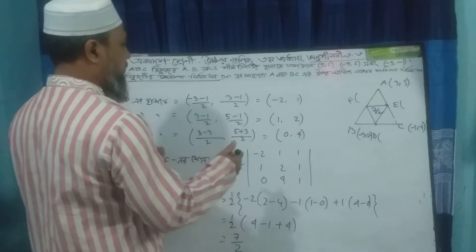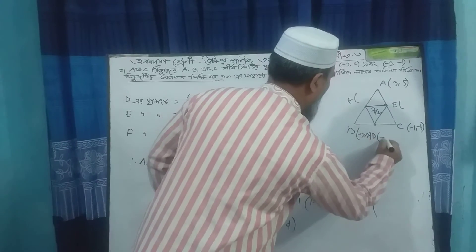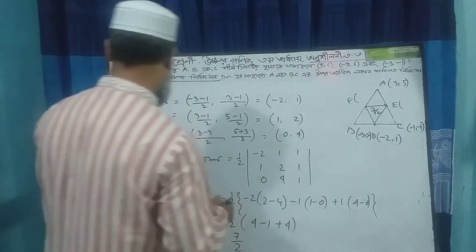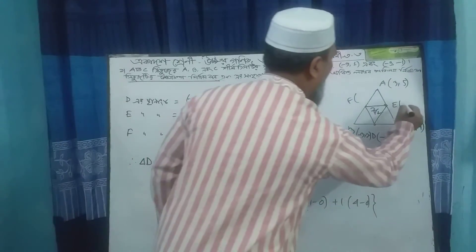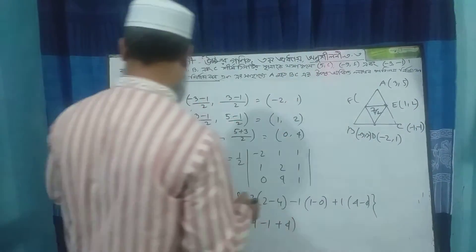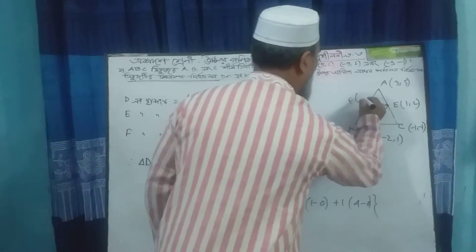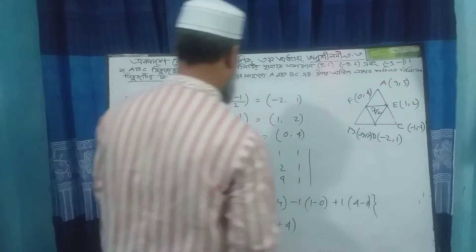d8 is tanagou minus 2, 1. e8 is tanagou 1, 2. If you are tanagou jitu 4.